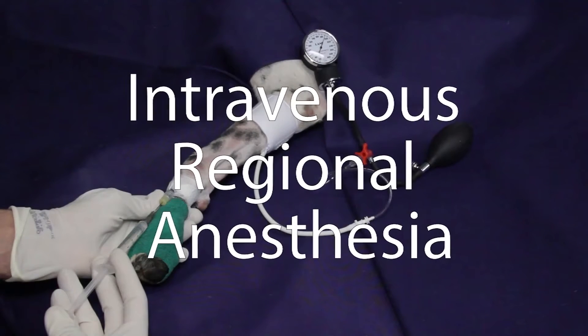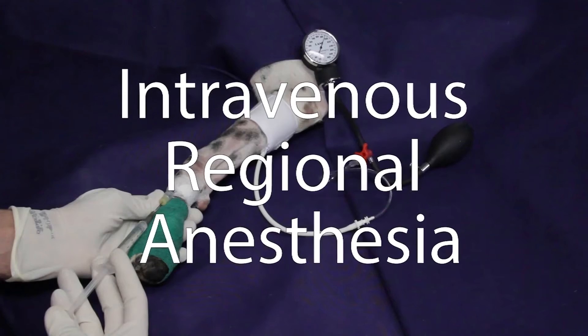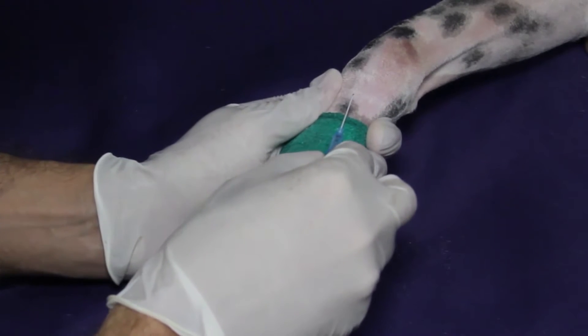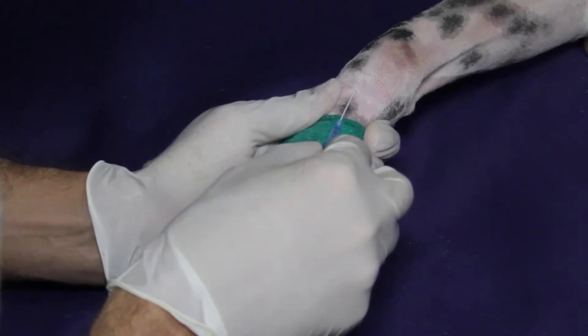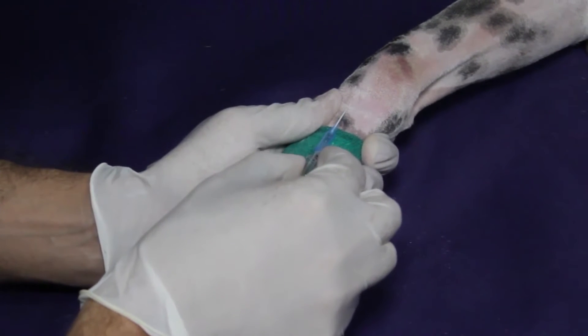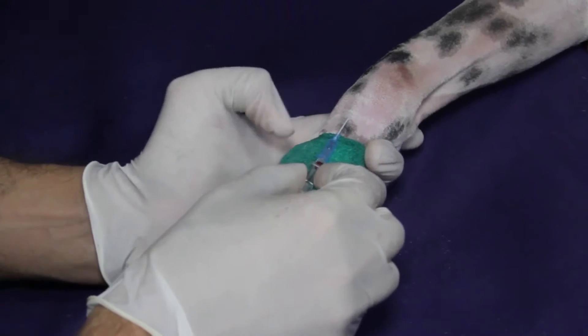Intravenous Regional Anesthesia. After surgical preparation of the affected limb, an intravenous catheter is inserted close to the surgical site, ideally in a retrograde manner, and fixated in place.